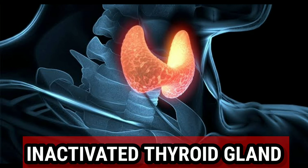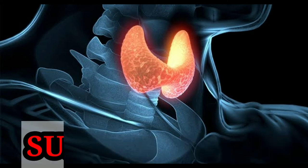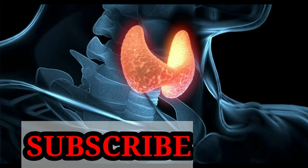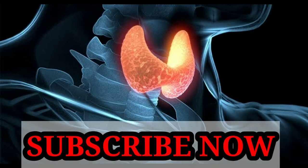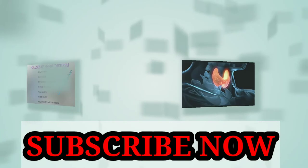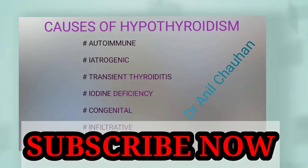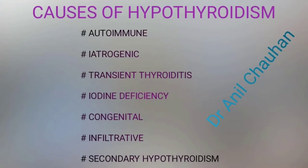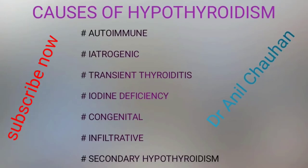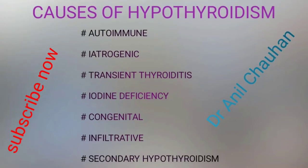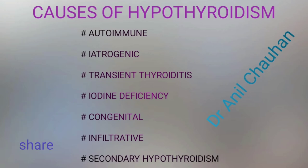Inactivated thyroid glands result in reduced thyroid hormone. The causes of hypothyroidism include autoimmune, iatrogenic, transient thyroiditis, iodine deficiency, congenital, infiltrative, and secondary hypothyroidism.